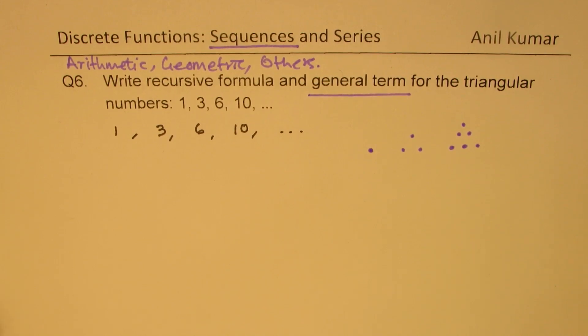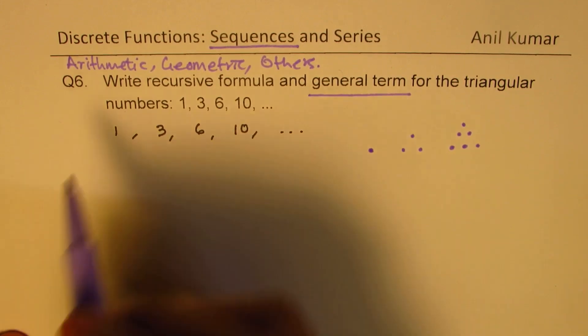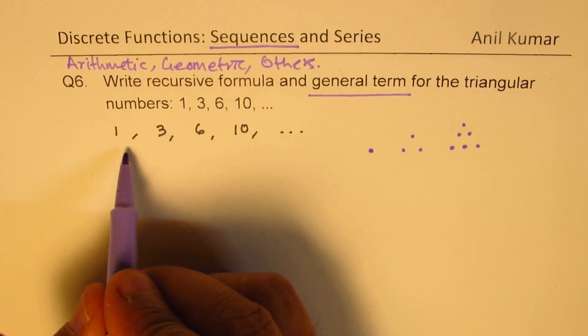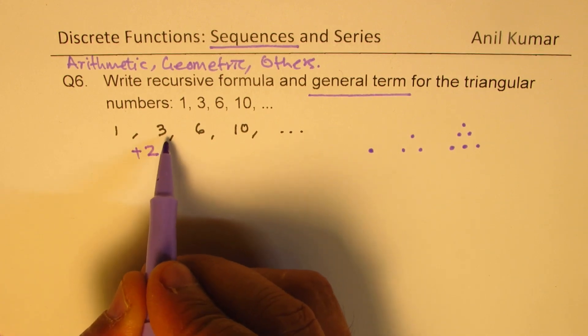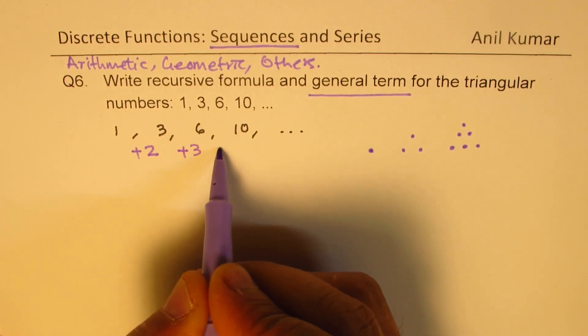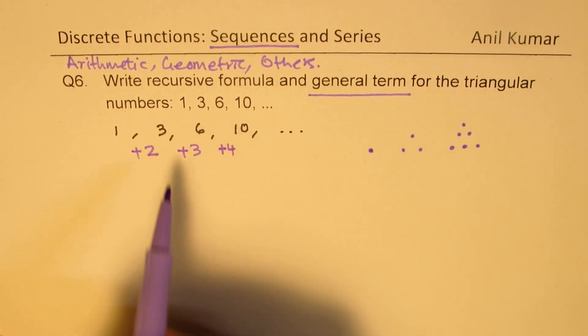Now here what is happening - if I have to go from one to three, I basically add two. Then from three to six I'm adding three, and then I'm adding four. Do you see that?